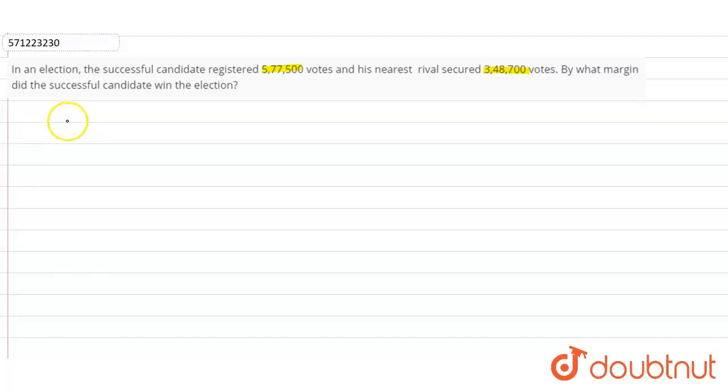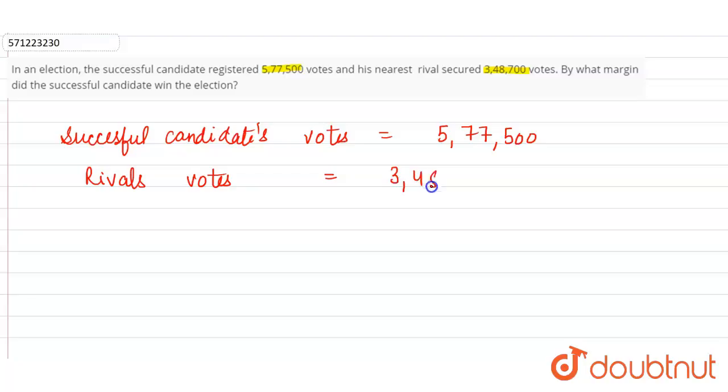So, successful candidate's votes were five lakh seventy-seven thousand five hundred, and rival's votes were three lakh forty-eight thousand seven hundred. So to calculate the margin,